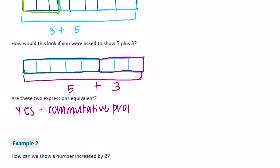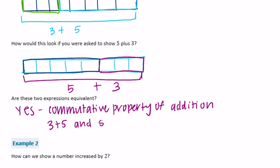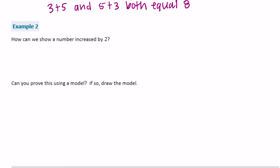This shows the commutative property of addition that we talked about in the last lesson. So 3 plus 5 and 5 plus 3 both equal 8.